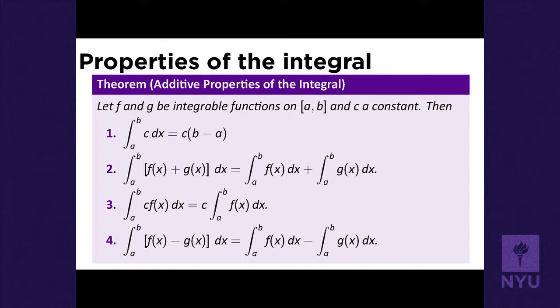What other properties does this integral have? If you integrate a constant function, you get that constant times the width of the interval — basically the area of a rectangle. The integral of a sum is the sum of the integrals, from the limit of a sum rule. Multiplying a function by a constant multiplies its integral by that same constant.